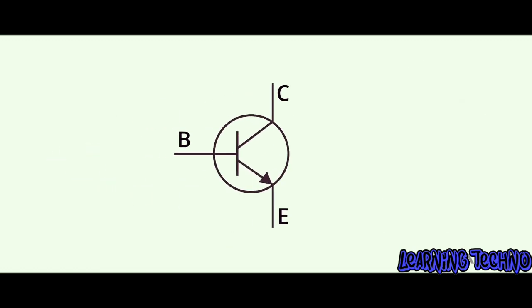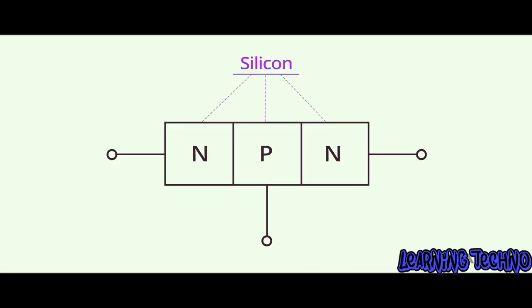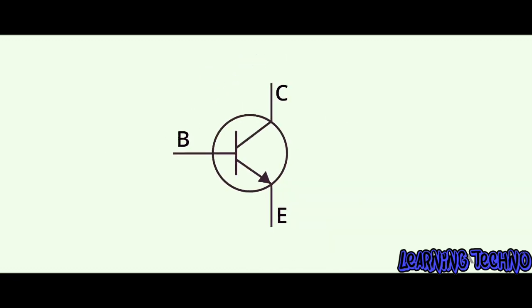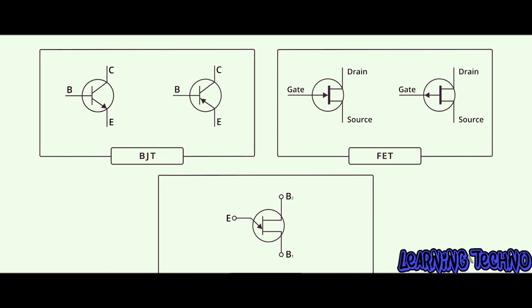A basic transistor consists of three chunks or pieces of silicon sandwiched together. As mentioned earlier, there are many different types of transistors. In this video, we'll focus on the bipolar junction transistor, which is probably the most common.